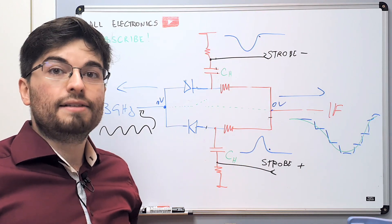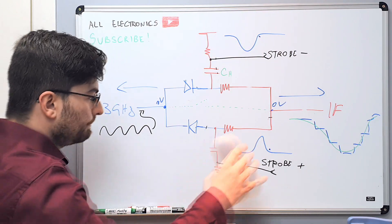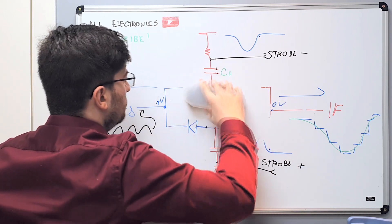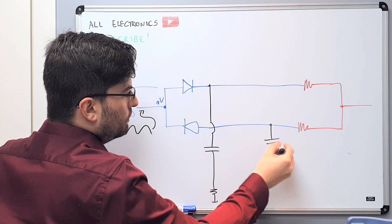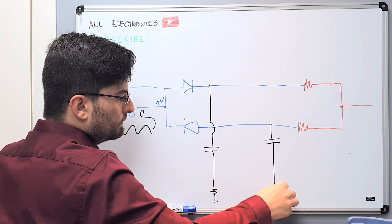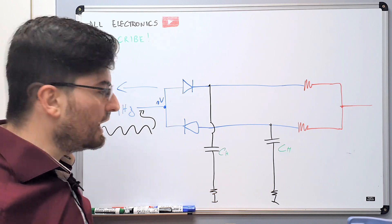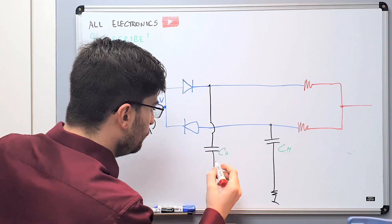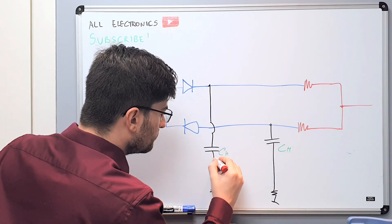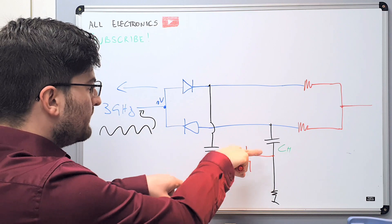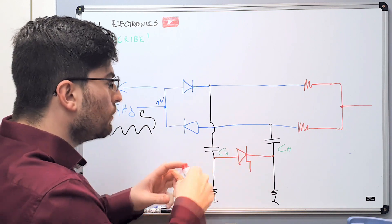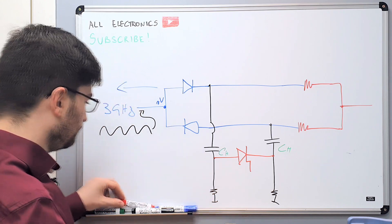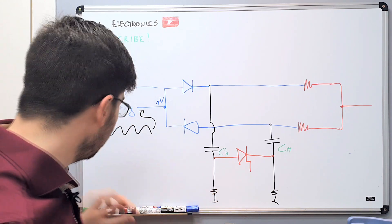How do we generate these very fast strobe pulses? To generate the very fast pulses we are going to use a step recovery diode. The step recovery diode will be placed here. To generate a differential signal we can use a balun — a current balun. This is complicated but very interesting.